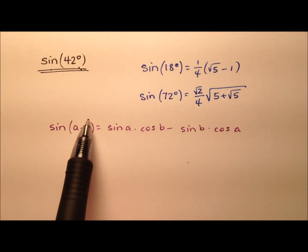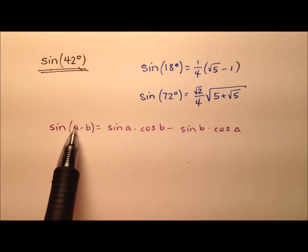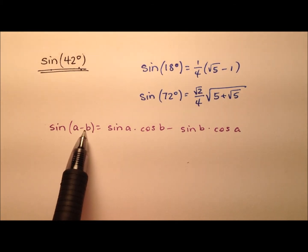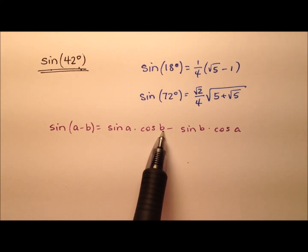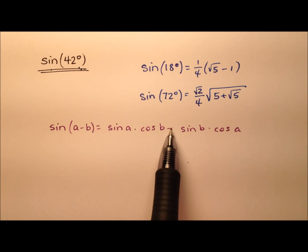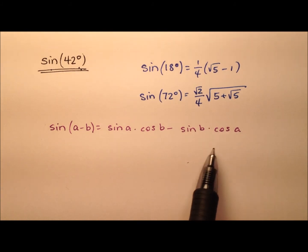So we're saying the sine of two angles a and b, and when we subtract them, we can expand it this way. It's the sine of a, which is the first angle, times the cosine of b, which is the second angle, minus the sine of b times the cosine of a.